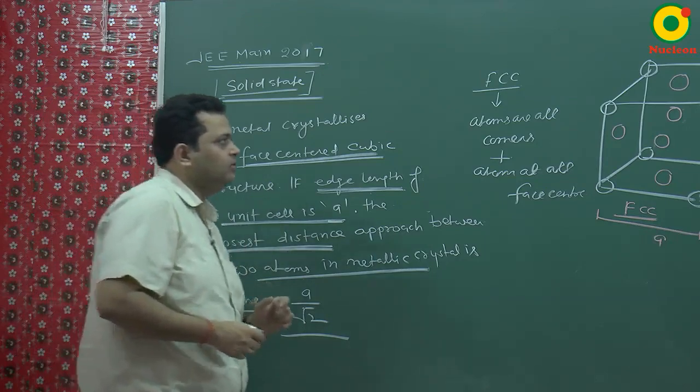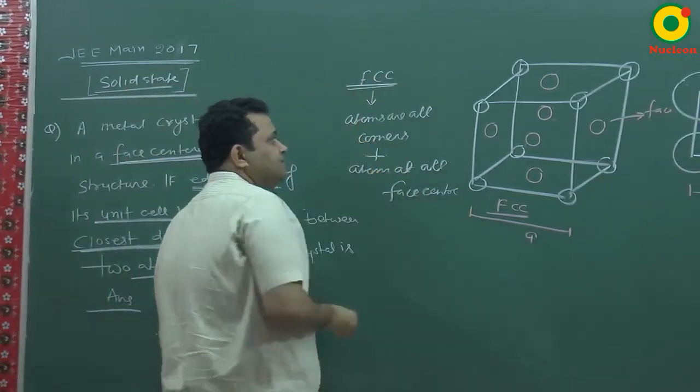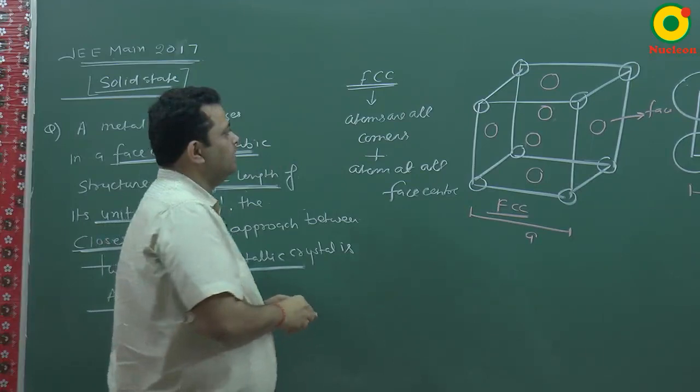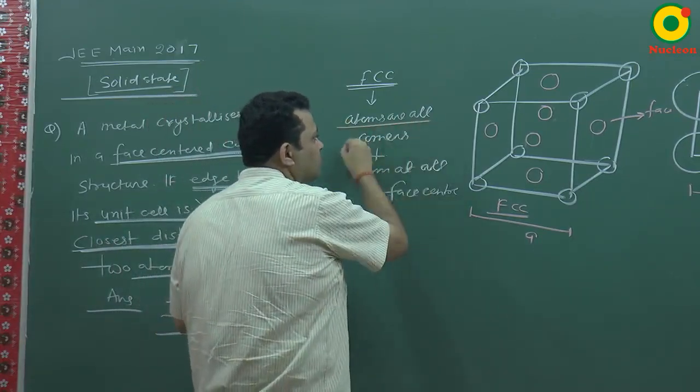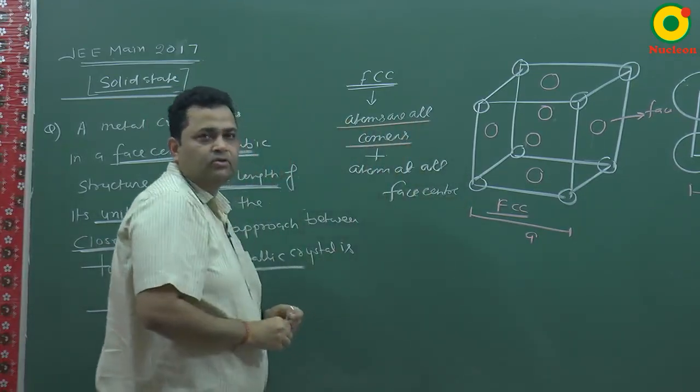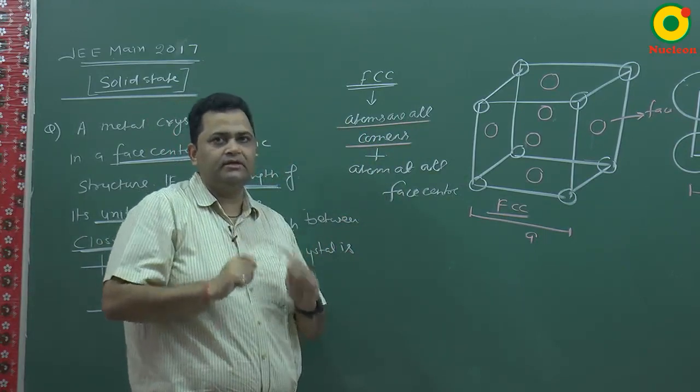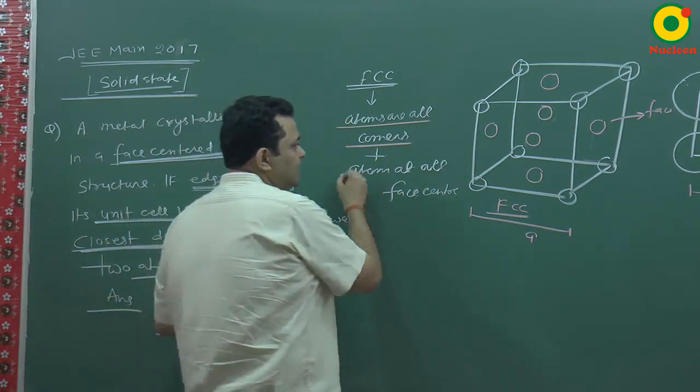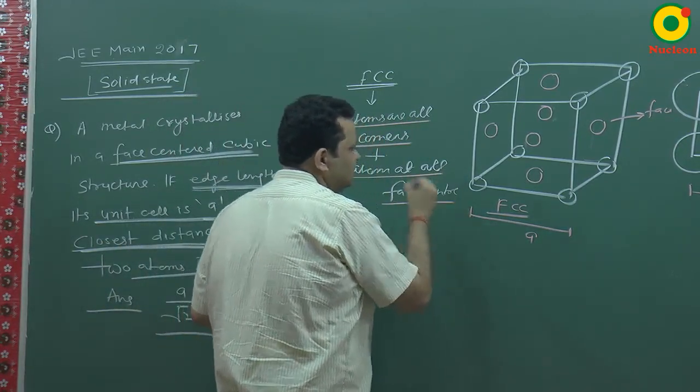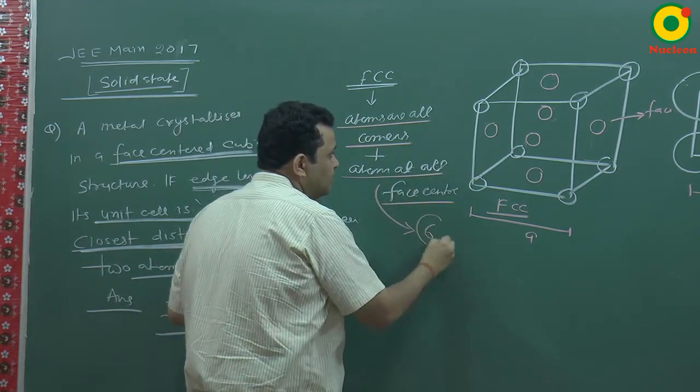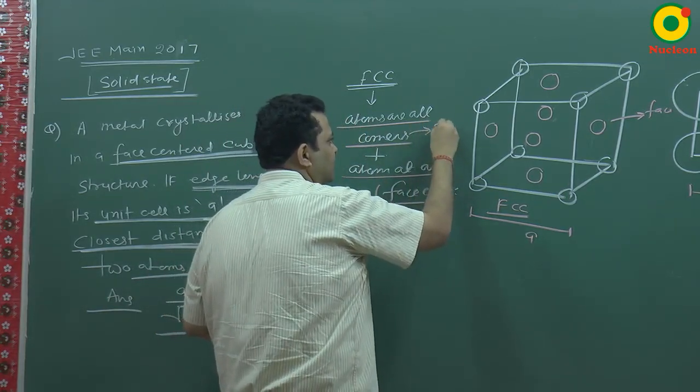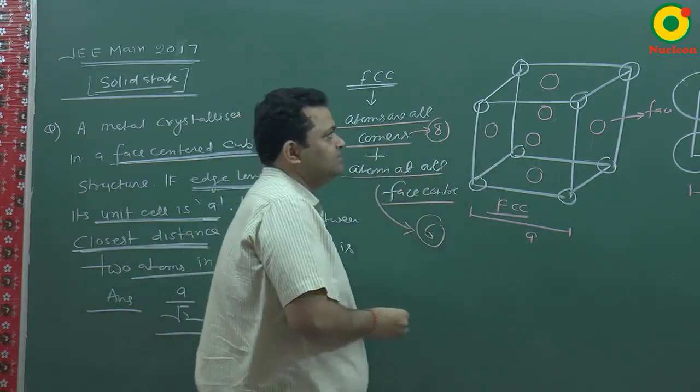Now we are going to study FCC structure. Face-centered cubic structure means that atoms are at all corners. So corners are at any cube, and atoms are at all face centers. So how many faces are there? Six. How many corners are there? Eight.